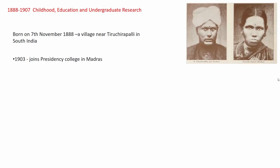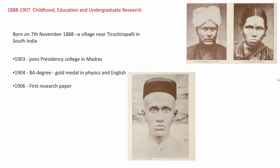In 1903 Raman joined Presidency College in Madras, current day Chennai, and obtained a BA degree with a gold medal in physics and English with flying colours. He is rated as one of the top students in that college. As early as 1906 Raman published his first research paper on oblique illumination of light onto a particular slit and the diffraction pattern one can obtain from that slit — a very neat piece of work. His very first research paper was on an optics topic, which actually continued as a theme until his death.